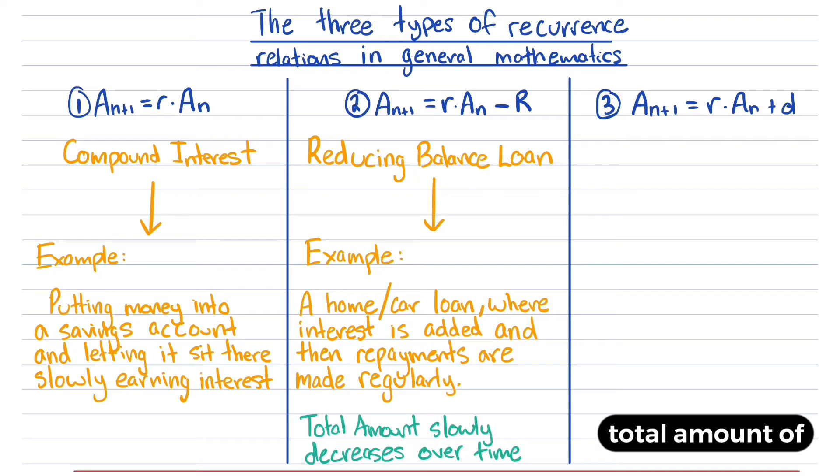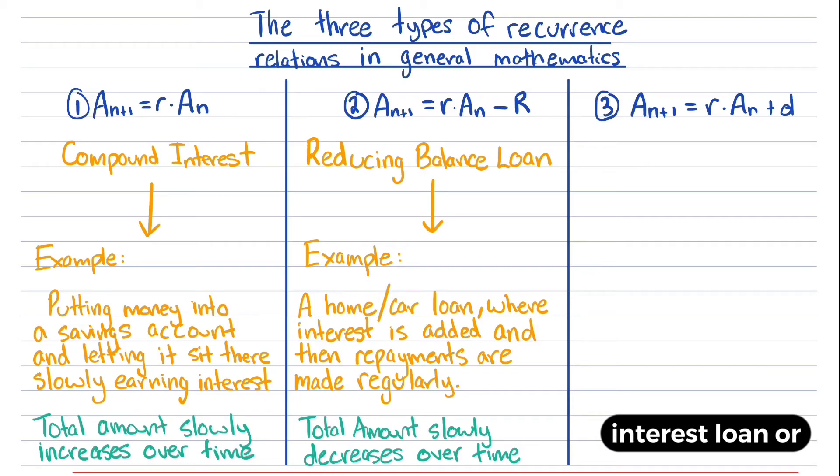The total amount of the loan gradually goes down until it's paid off, which means the total amount would be zero. With reducing balance loans, the total amount slowly decreases over time, whereas with a compound interest recurrence relation, the total amount slowly increases over time.